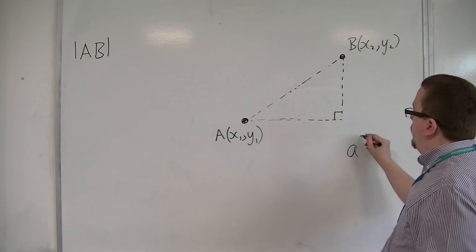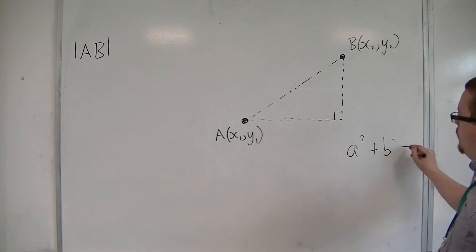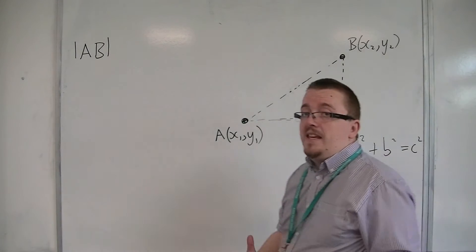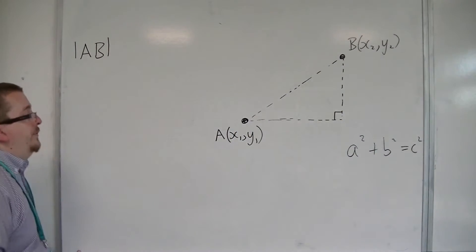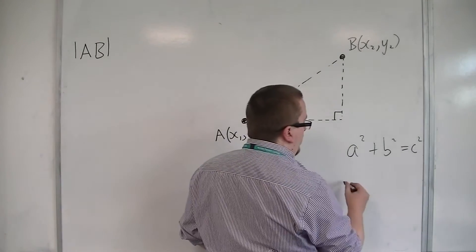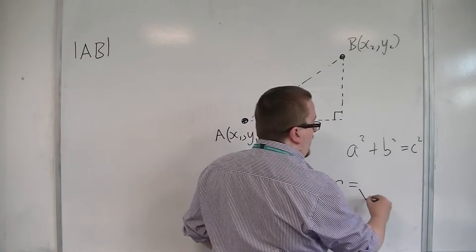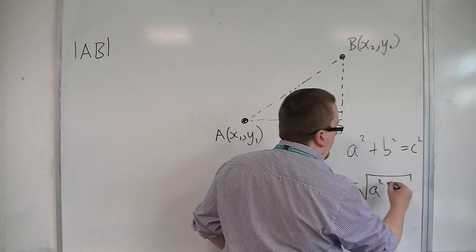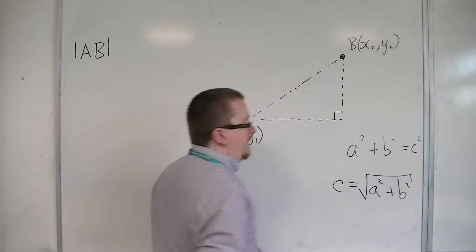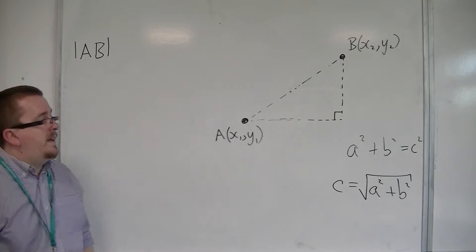Pythagoras' theorem says A squared plus B squared equals C squared, where C is the hypotenuse. So that means if you rearrange that and square root both sides, then C is the square root of A squared plus B squared. So there's nothing really new there.